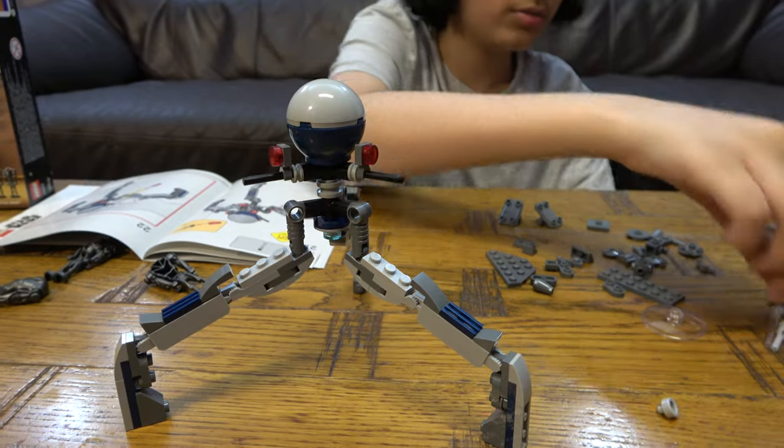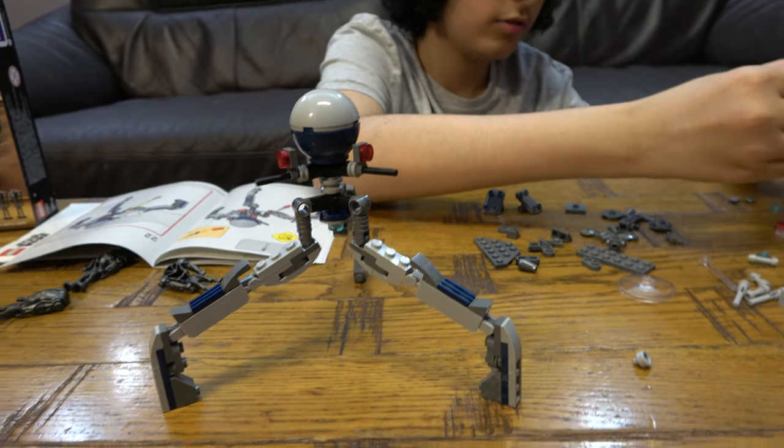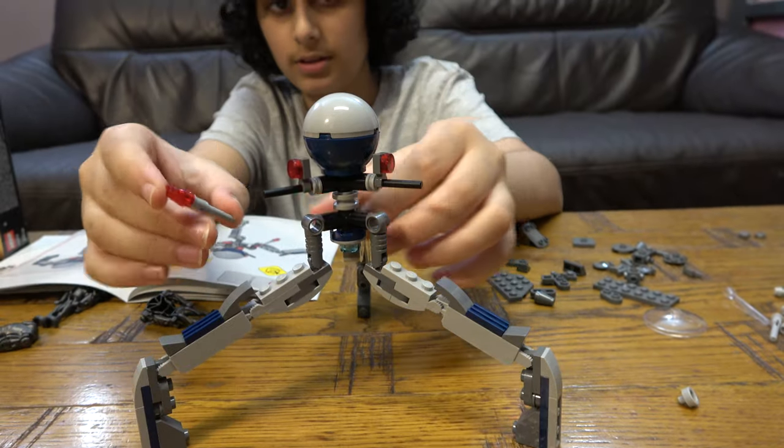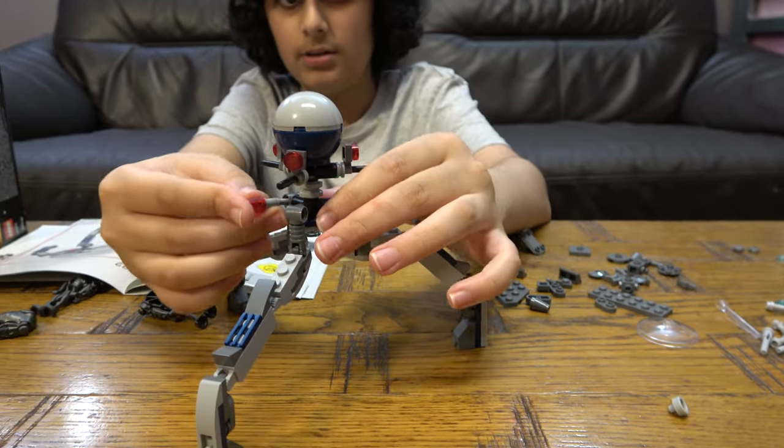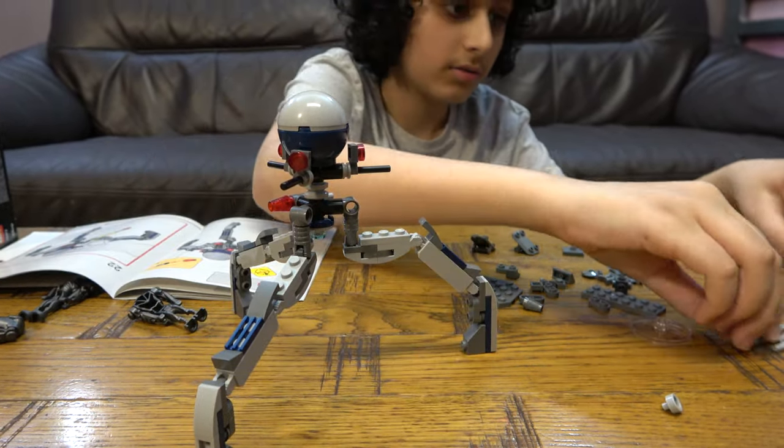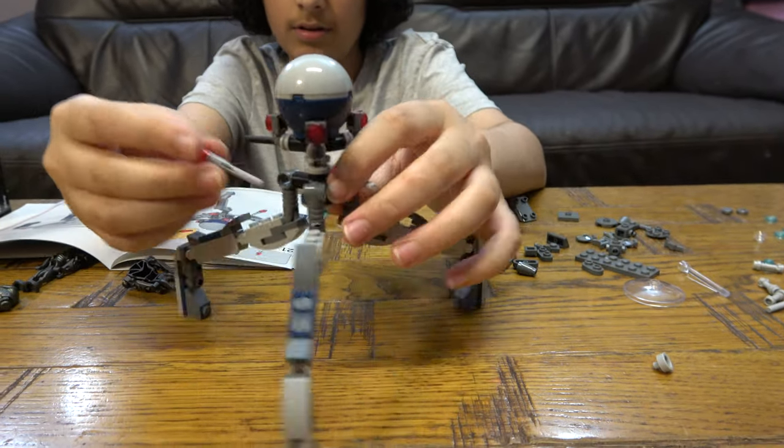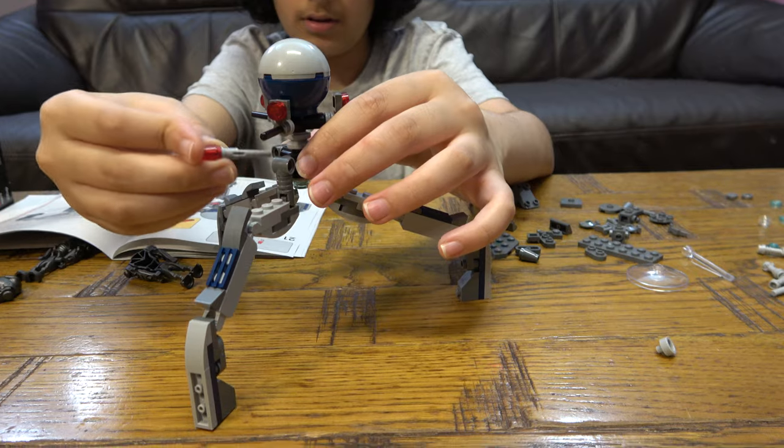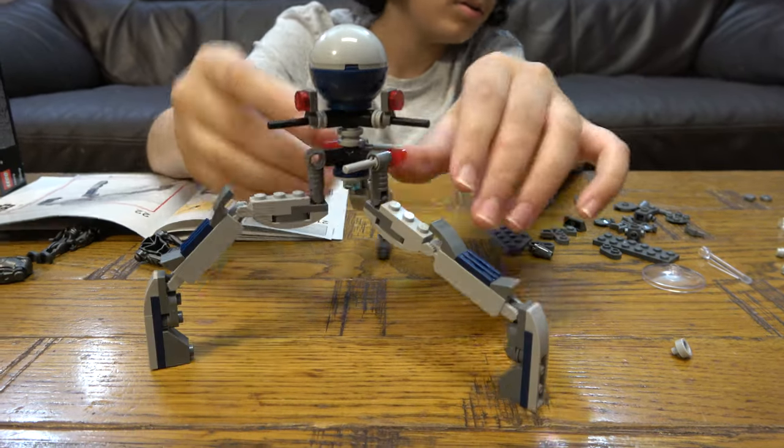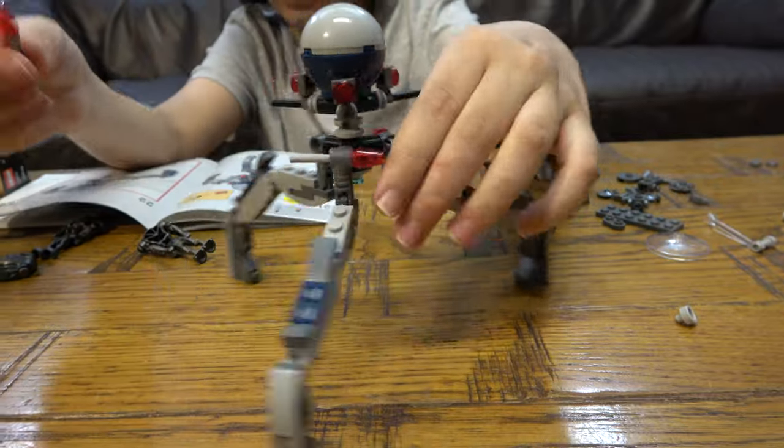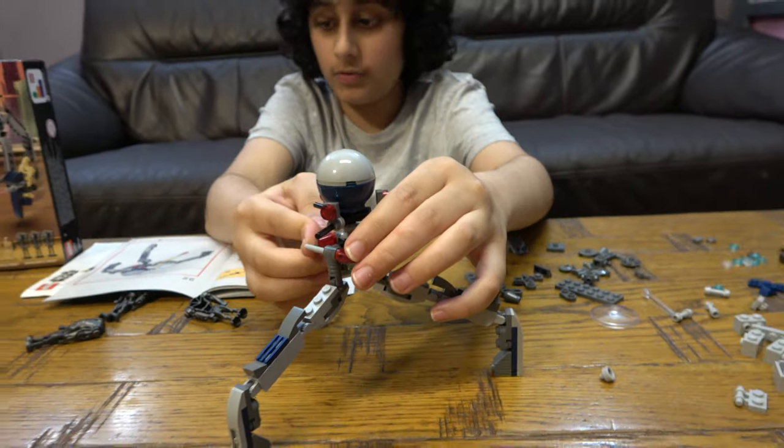And lastly, we're just going to get simply three flick fire missiles like that and place them here. And do that for the rest of them. And one more flick fire missile, the last one. And here we have the finished thing.